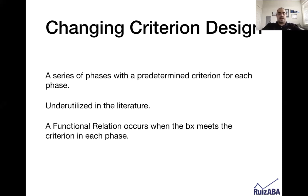The changing criterion design is a series of phases where a predetermined criteria is developed for each phase, and that's usually a number or a duration. It is a really underutilized design in the literature, and it's actually a really strong design. A functional relation is said to occur when the behavior meets the criterion in each phase — in other words, the behavior will always conform to the criteria.